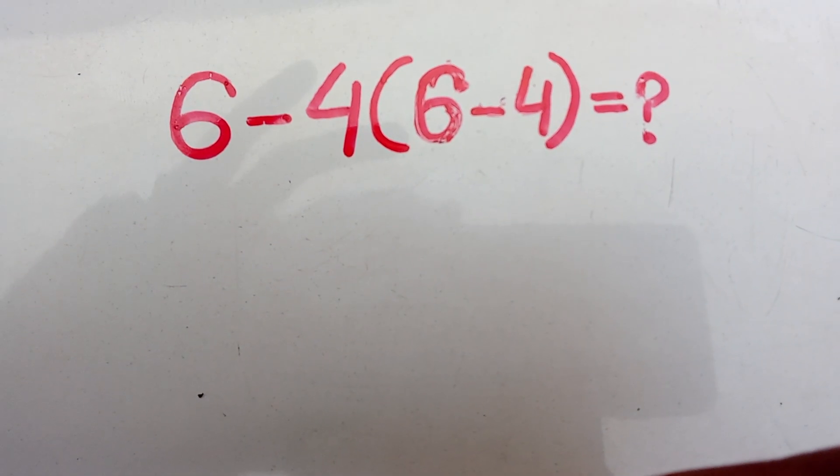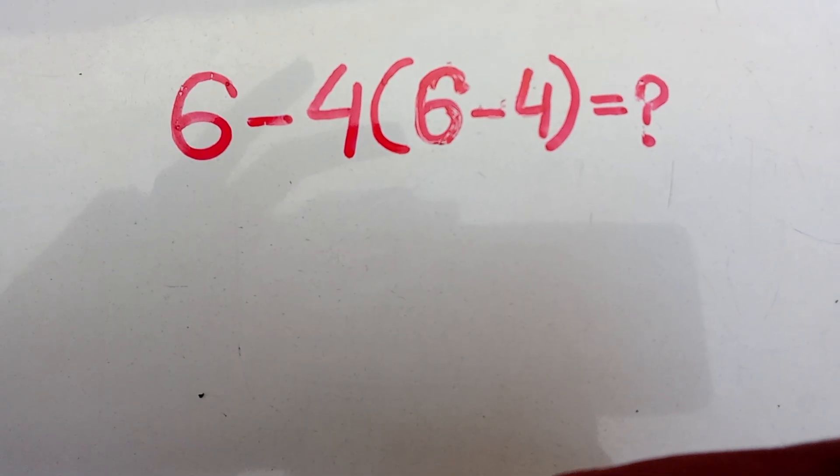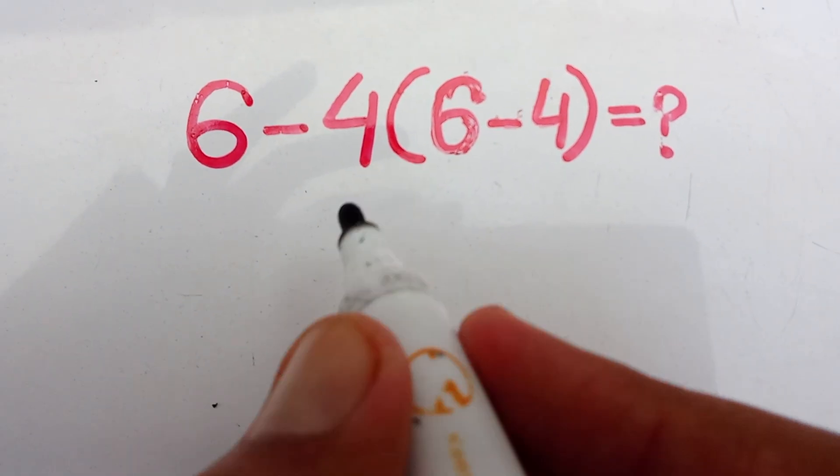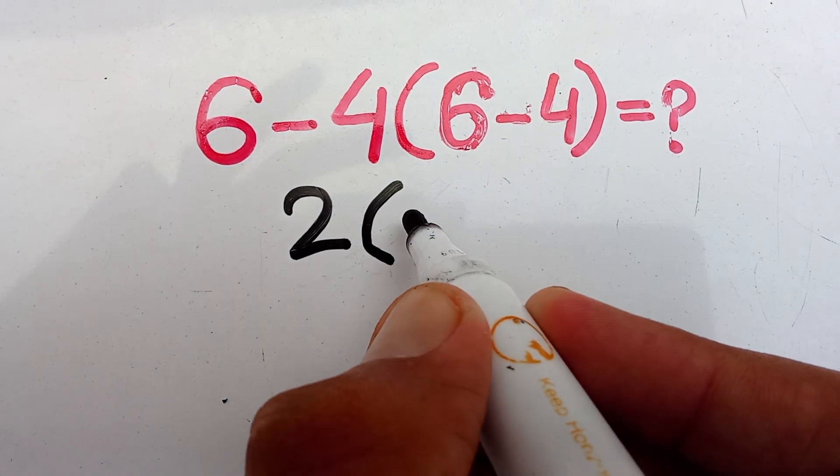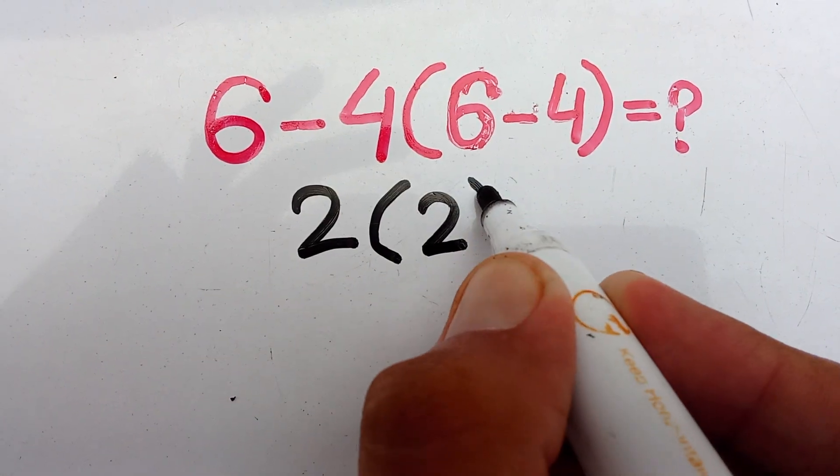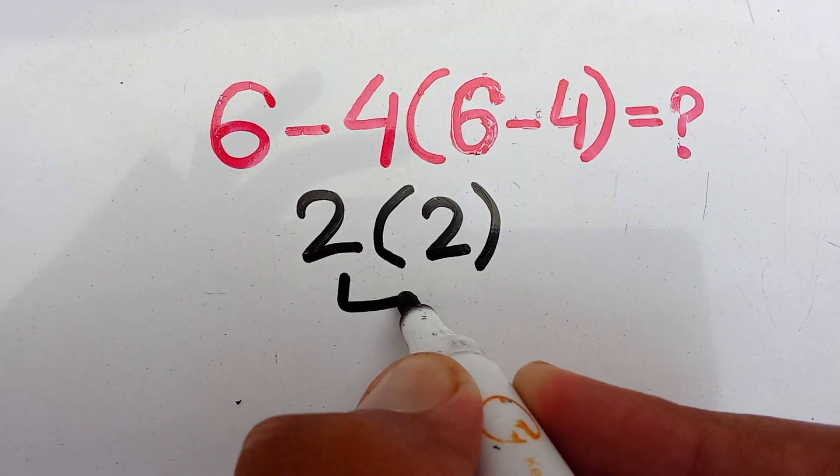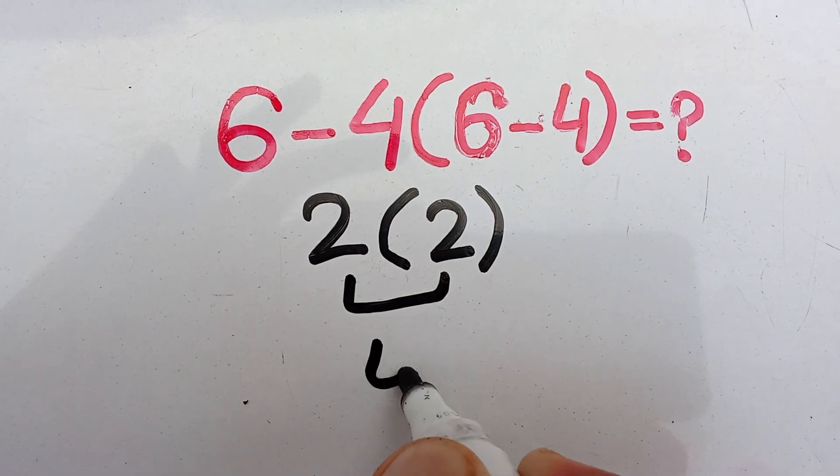If you have not subscribed my channel then kindly subscribe my channel for more interesting videos. So 6 minus 4 which is equal to 2, parenthesis 6 minus 4 again equal to 2, so 2 times 2 equal to 4. But this answer is wrong because of the order of operations.